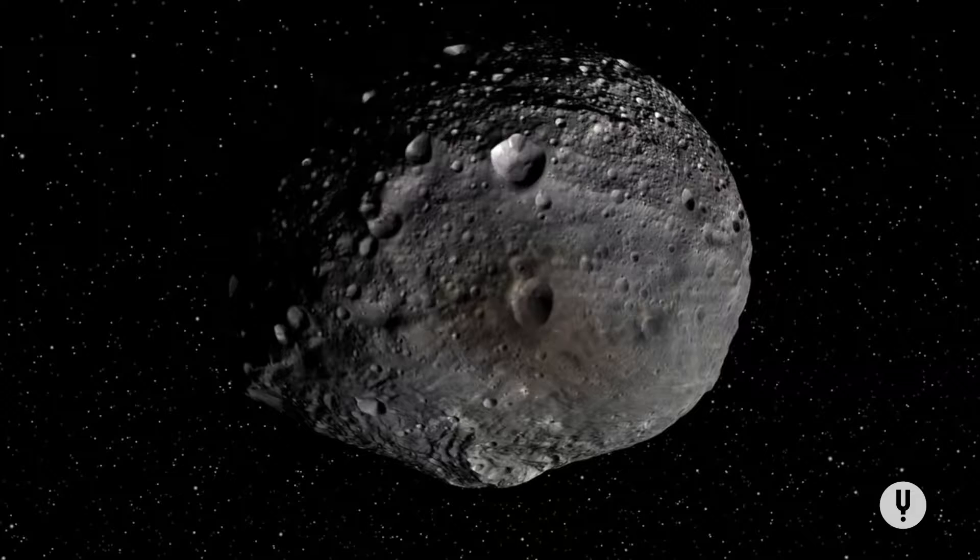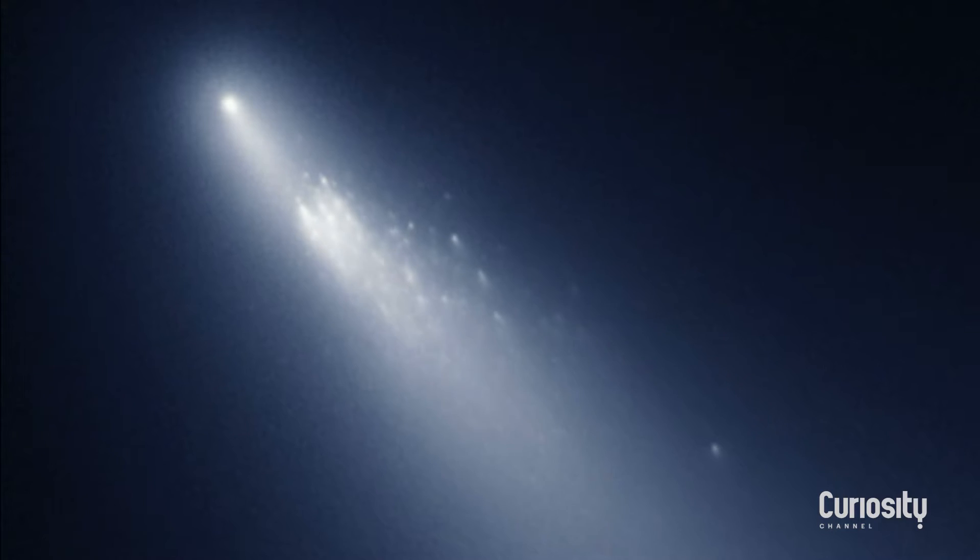For a long time, the traditional definition of an asteroid and a comet is that an asteroid's a rocky body, and a comet's an icy body that shows activity: a coma, jets, a halo, those types of things that we associate with a comet.